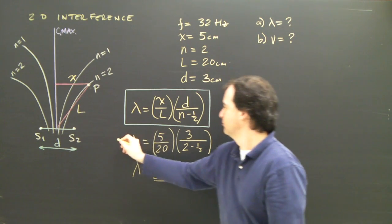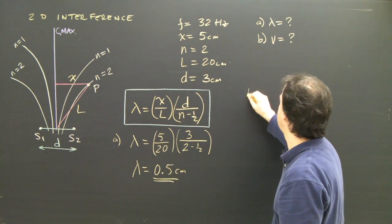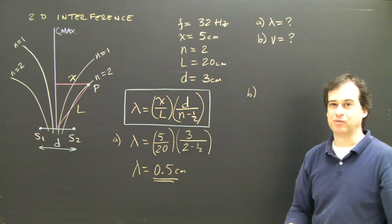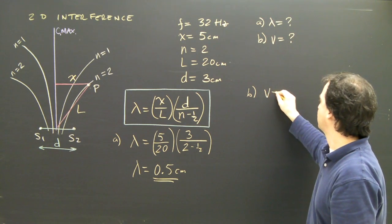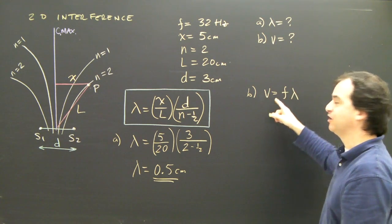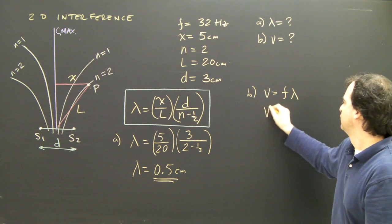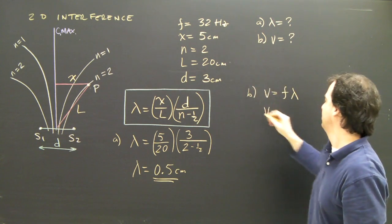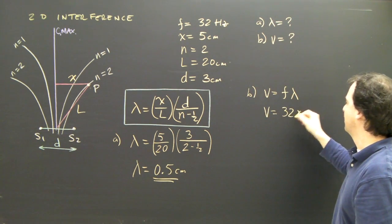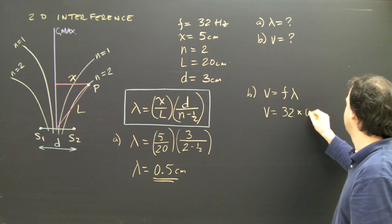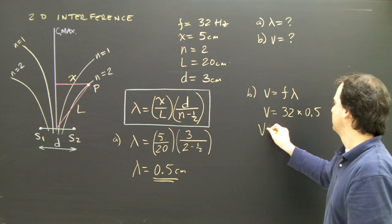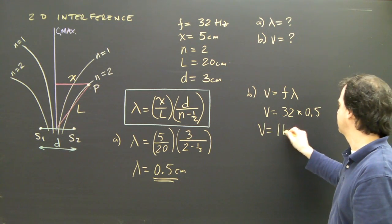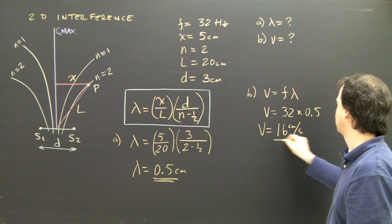Now that's part A. For part B, I want to know how fast the wave is traveling. Well, we have our universal wave equation, V equals F lambda. V is equal to the frequency, 32, times the wavelength, 0.5. The speed of the waves is 16 centimeters per second.